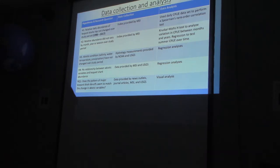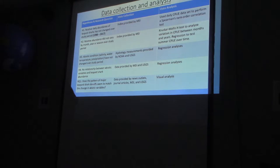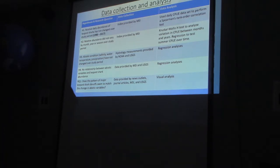Precipitation over time — another regression test. Hypothesis 4 is looking at whether there's been a relationship between abiotic variables and leopard shark abundance over time. This again involved a regression analysis. Research question 1 was a visual analysis, looking at whether the trend in abiotic variables tends to match the trend in abundance over time.